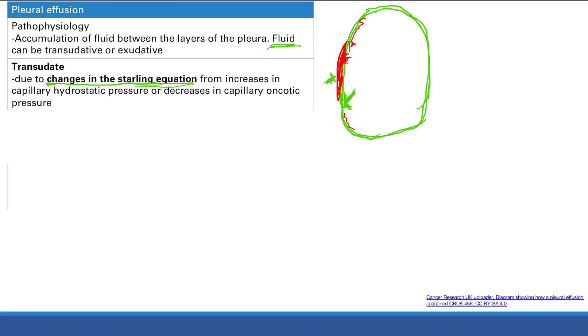you have decreased capillary oncotic pressure, fluid always goes from low to higher osmolarity. So fluid's going to go into the pleural space, and now, this is what our lungs are going to look like.